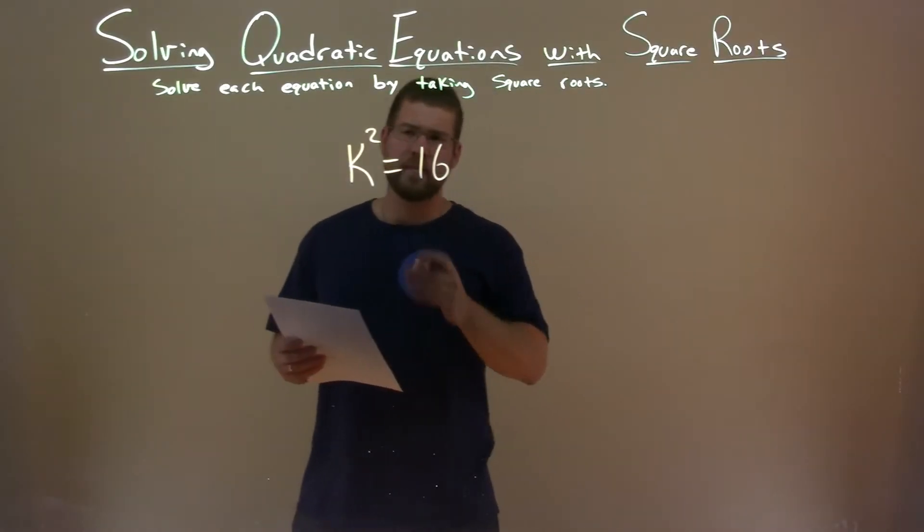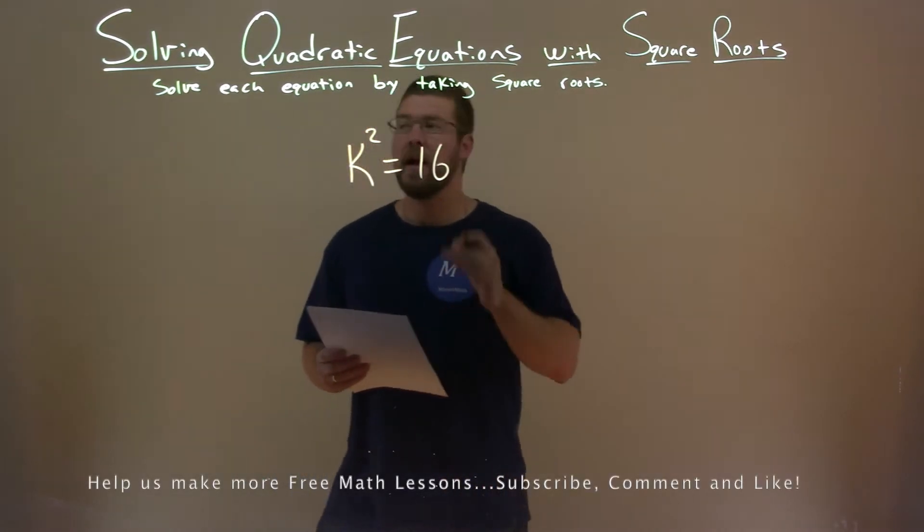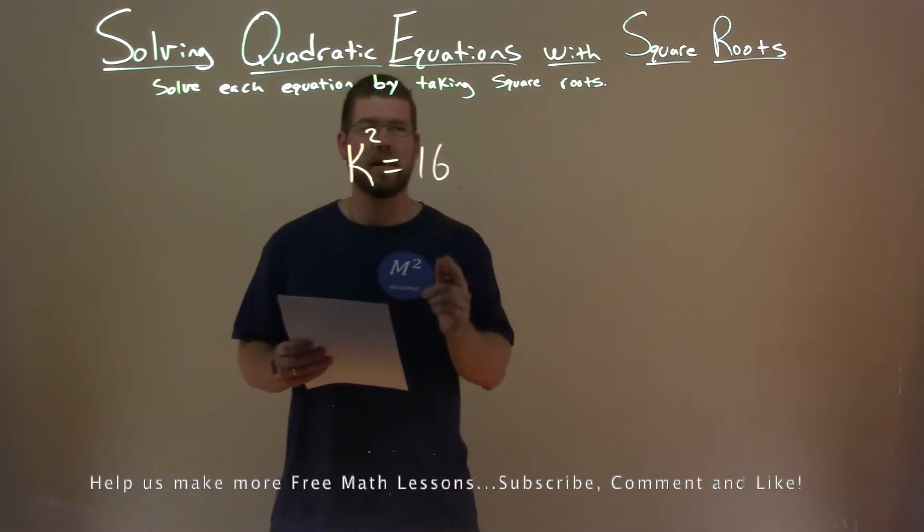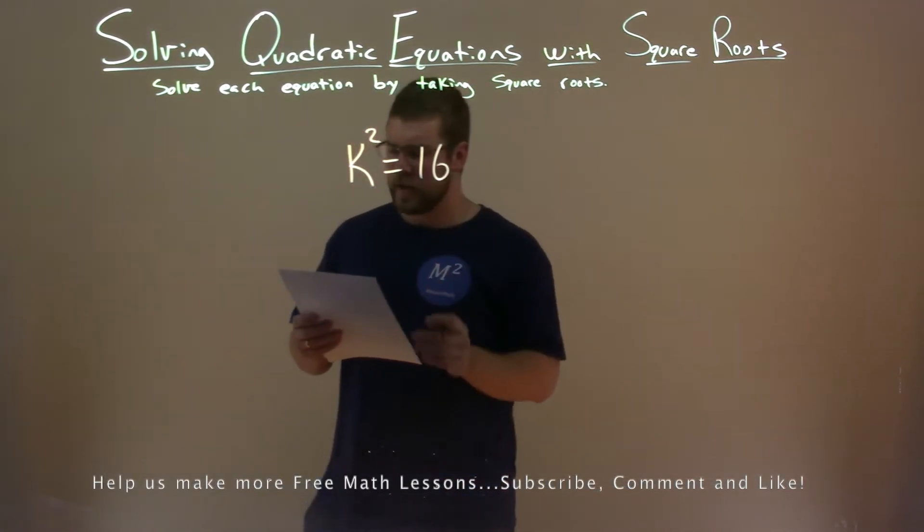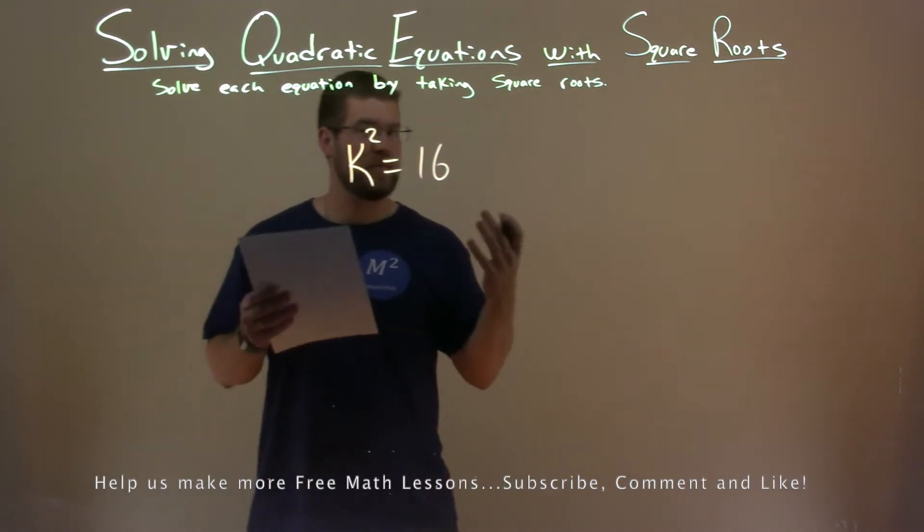We're given this problem here, k squared equals 16, and we want to solve this equation by taking the square root. Luckily, k is by itself already, so this is actually fairly easy.